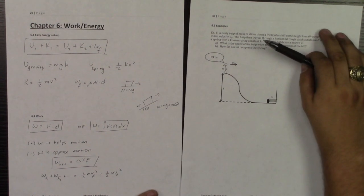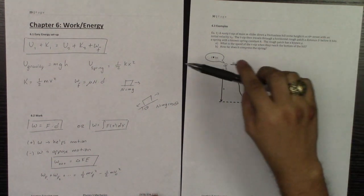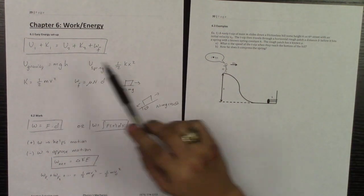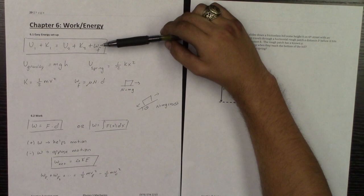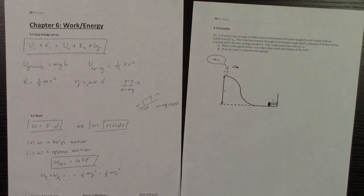Okay, so the way that I do conservation of energy, the way that I like to set it up, is you're going to go U1 plus K1 is equal to U2 plus K2 plus any work done by friction.